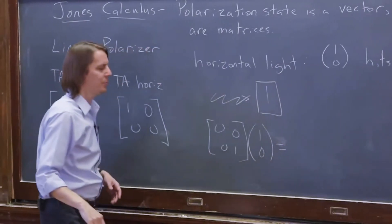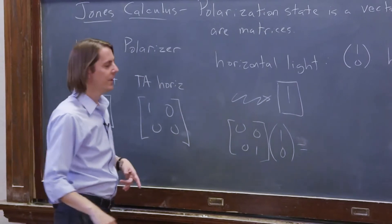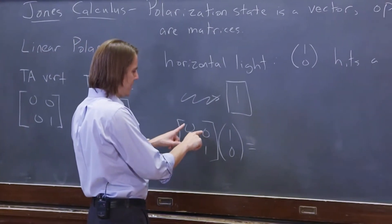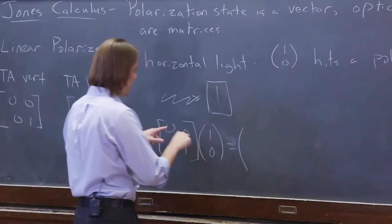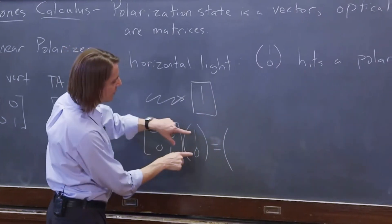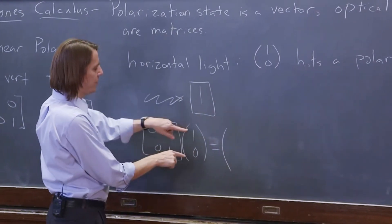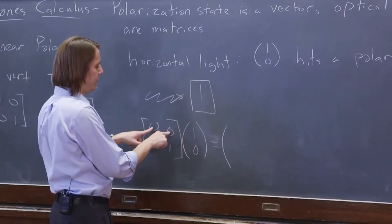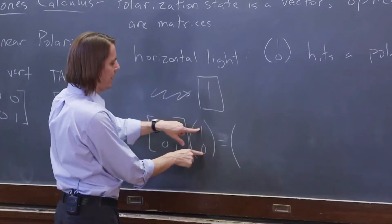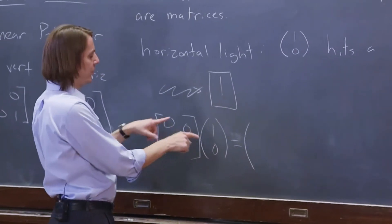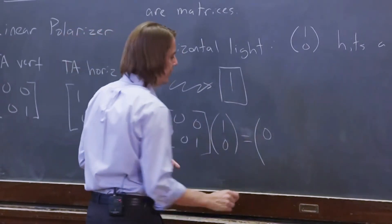You need to know how to multiply a matrix times a vector. For the top, you take the top row and turn it sideways times both of them. So 0 times 1 plus 0 times 0. Then you add what you get. 0 times 1 is 0, plus 0 times 0 is 0, you get 0.